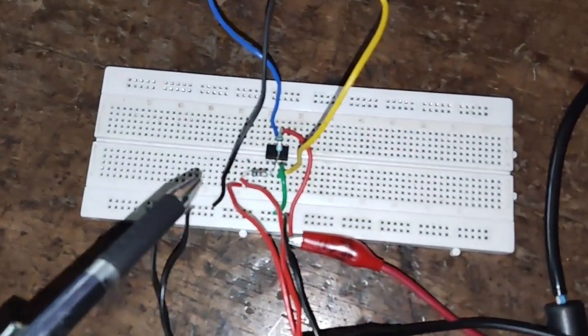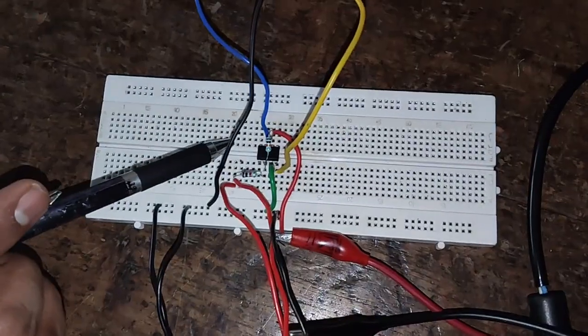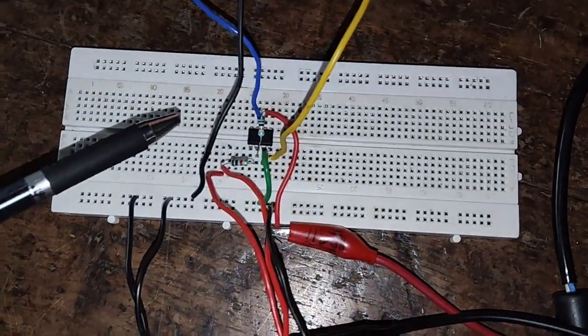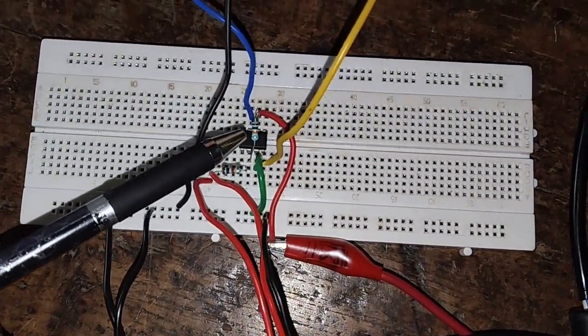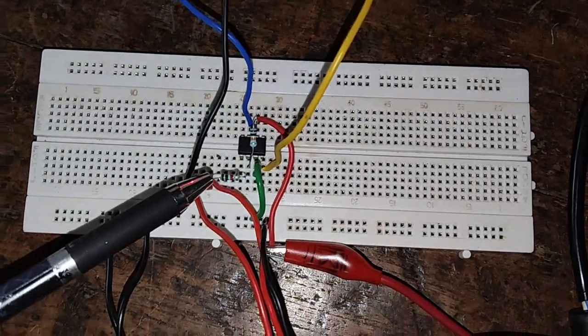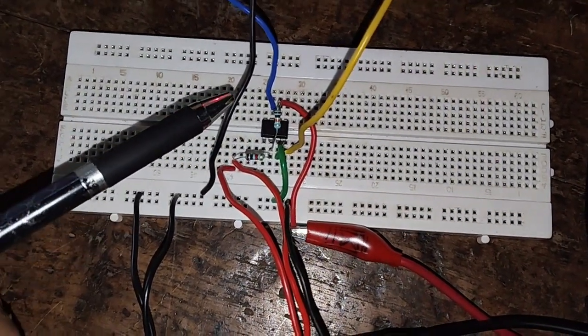On this breadboard, we can observe that the IC 741 is connected, resistor R1 is connected to pin number 2 and resistor Rf which is 10 kilo ohm is connected between pin number 2 and pin number 6.